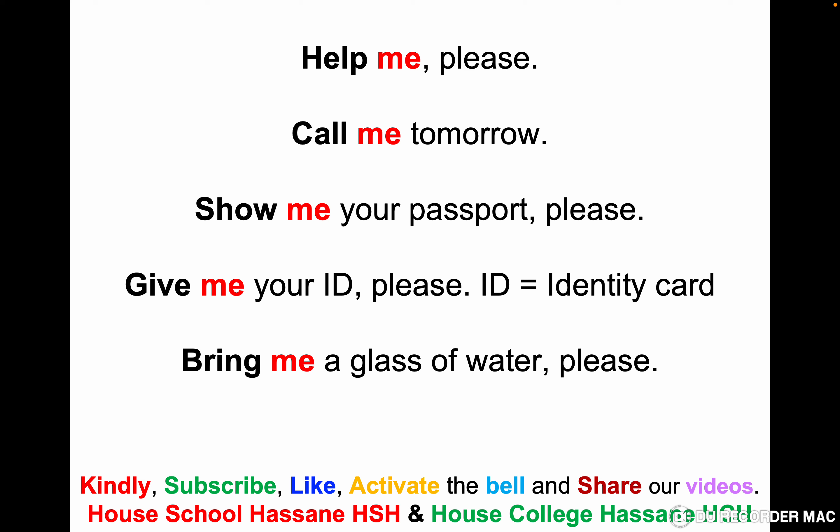Here we have examples using just 'me' with different verbs: 'help me please,' 'call me tomorrow,' 'show me your passport please,' 'give me your ID please' — ID means identity card — and 'bring me a glass of water please.' The word after each verb is 'me,' referring to 'I.' You cannot say 'help I,' 'call I,' 'show I,' 'give I,' or 'bring I,' because 'I' always comes before the verb.